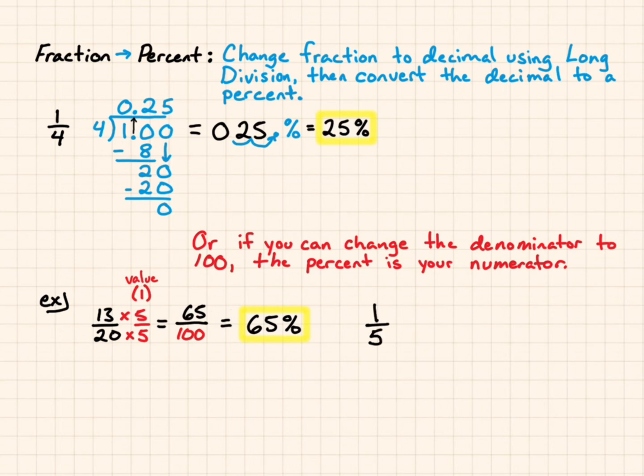Another example, 1/5. I can multiply 5 times 20 to get 100. So 1 times 20 gives me 20, I get 20%.